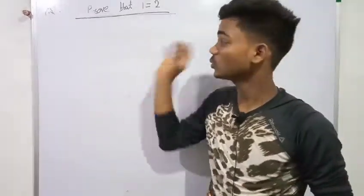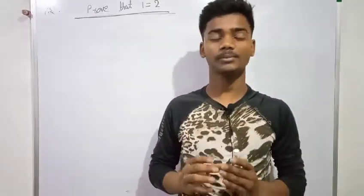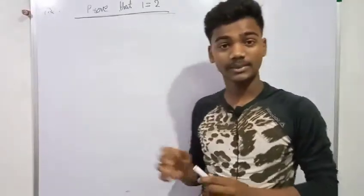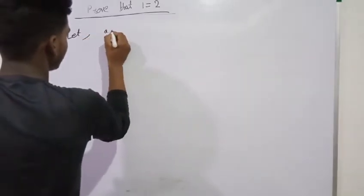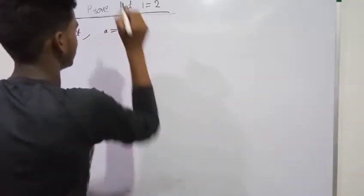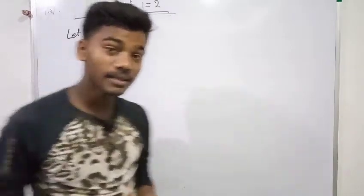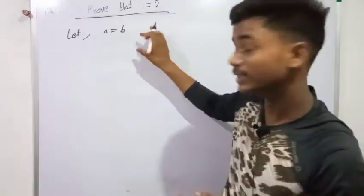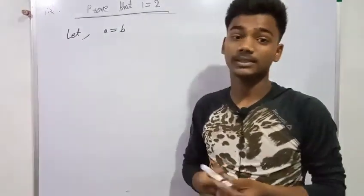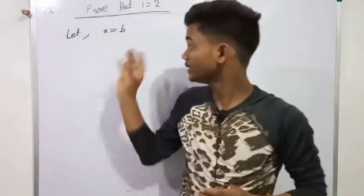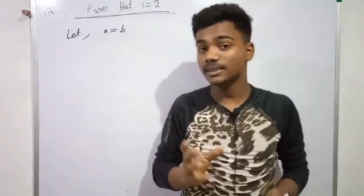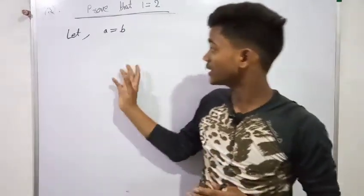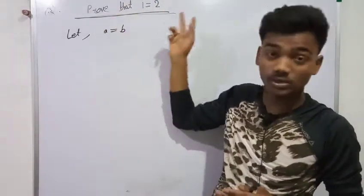So to prove it, we need to do some things that we normally can't do. Let A is equal to B. Here we can think that A is equal to B, and using some mathematical concepts we can prove this question.